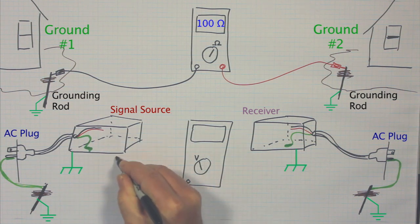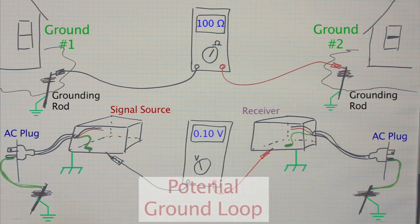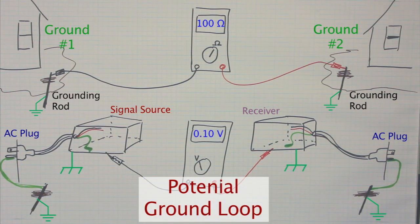But what's considered a small voltage difference for a safety ground can lead to problems for audio and video systems in the form of ground loops.